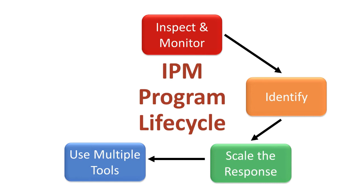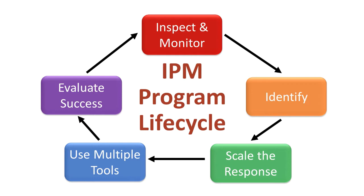Number four: multiple tools — employment of two or more control measures, which may be behavior change, mechanical, biological, or chemical. And number five: evaluation of effectiveness. How do we know if we've been effective? If we don't see pest activity, if our monitors back up that claim, and if residents are not reporting pest sightings, it is very likely that we have been effective.